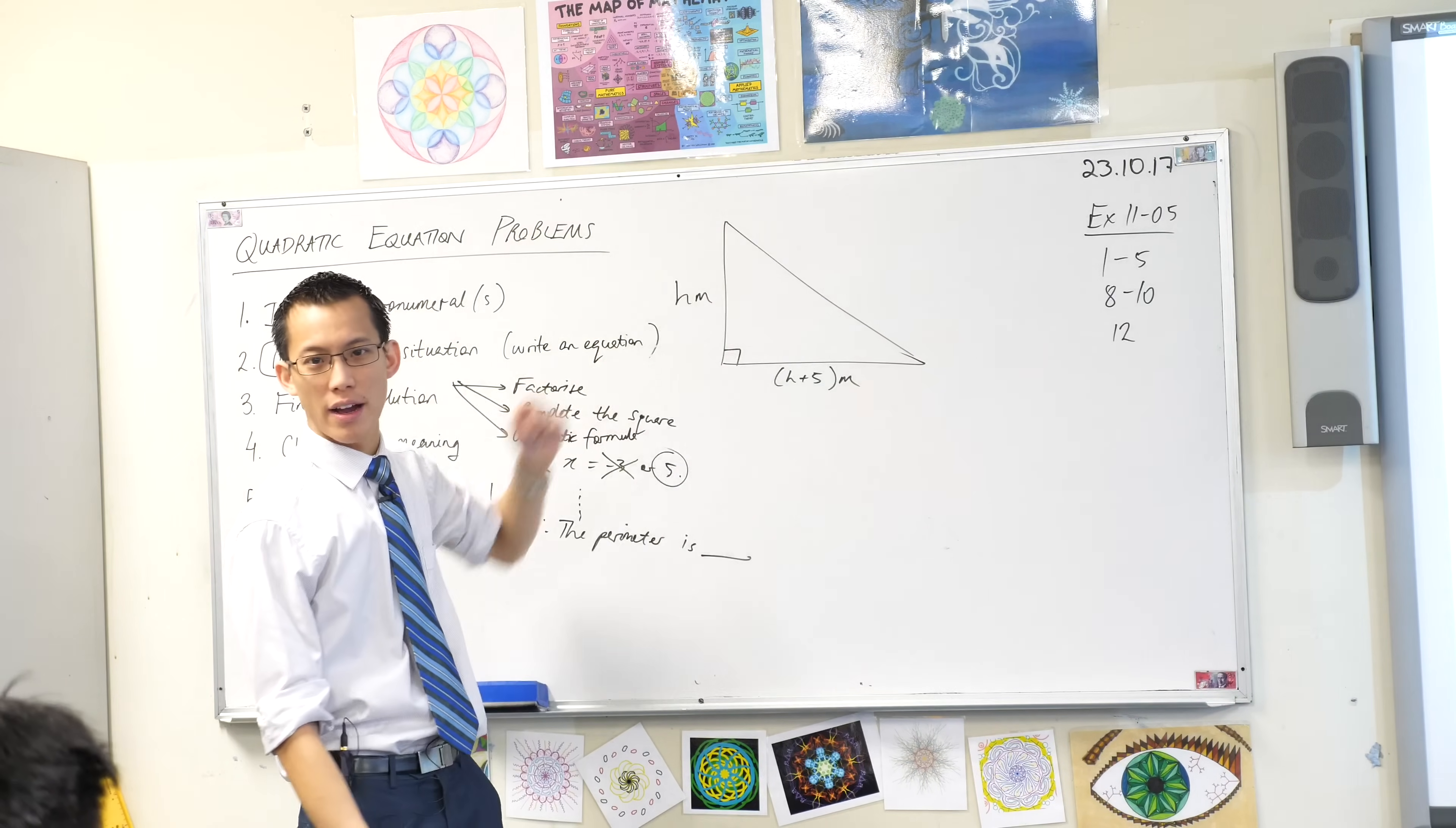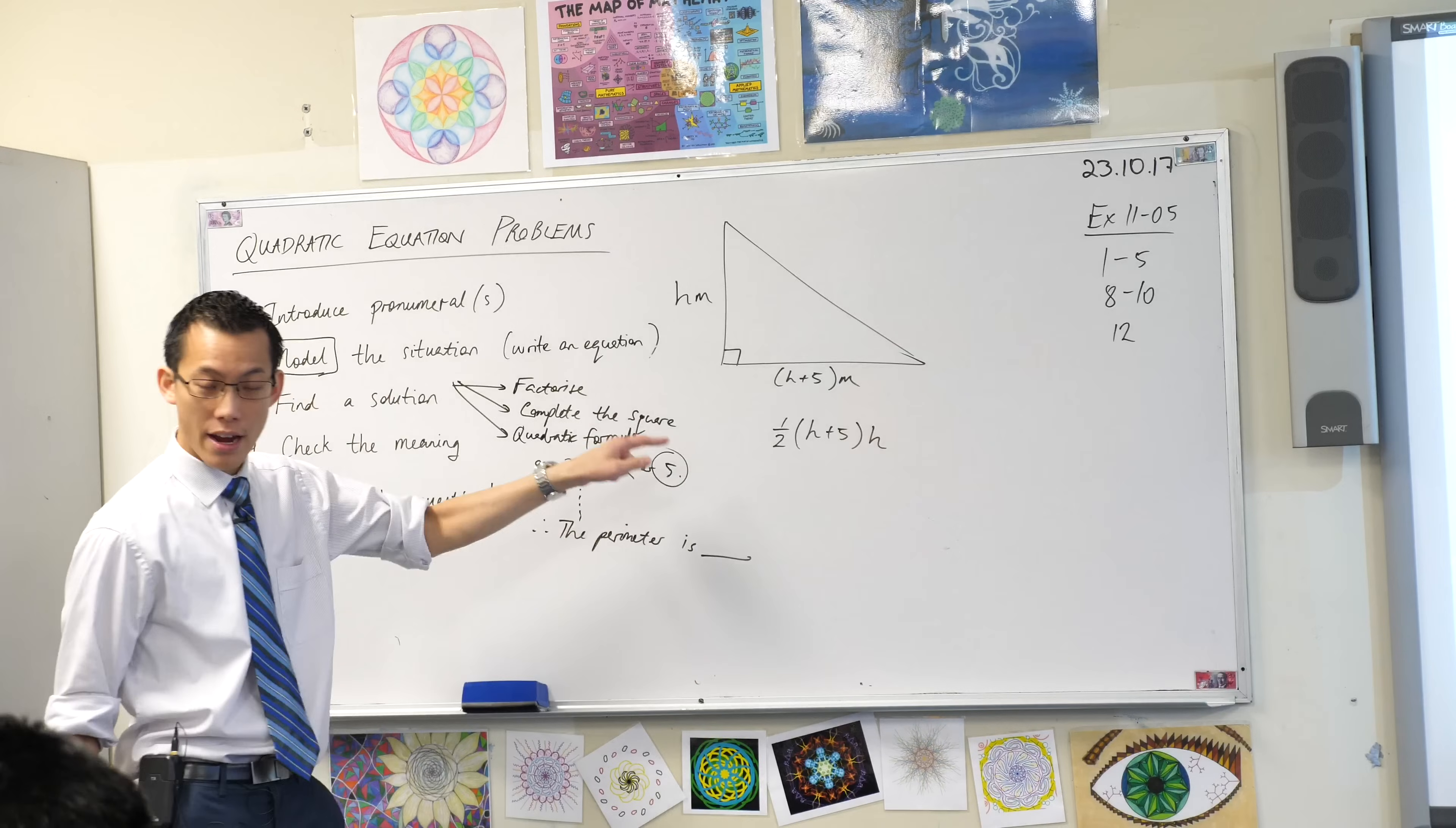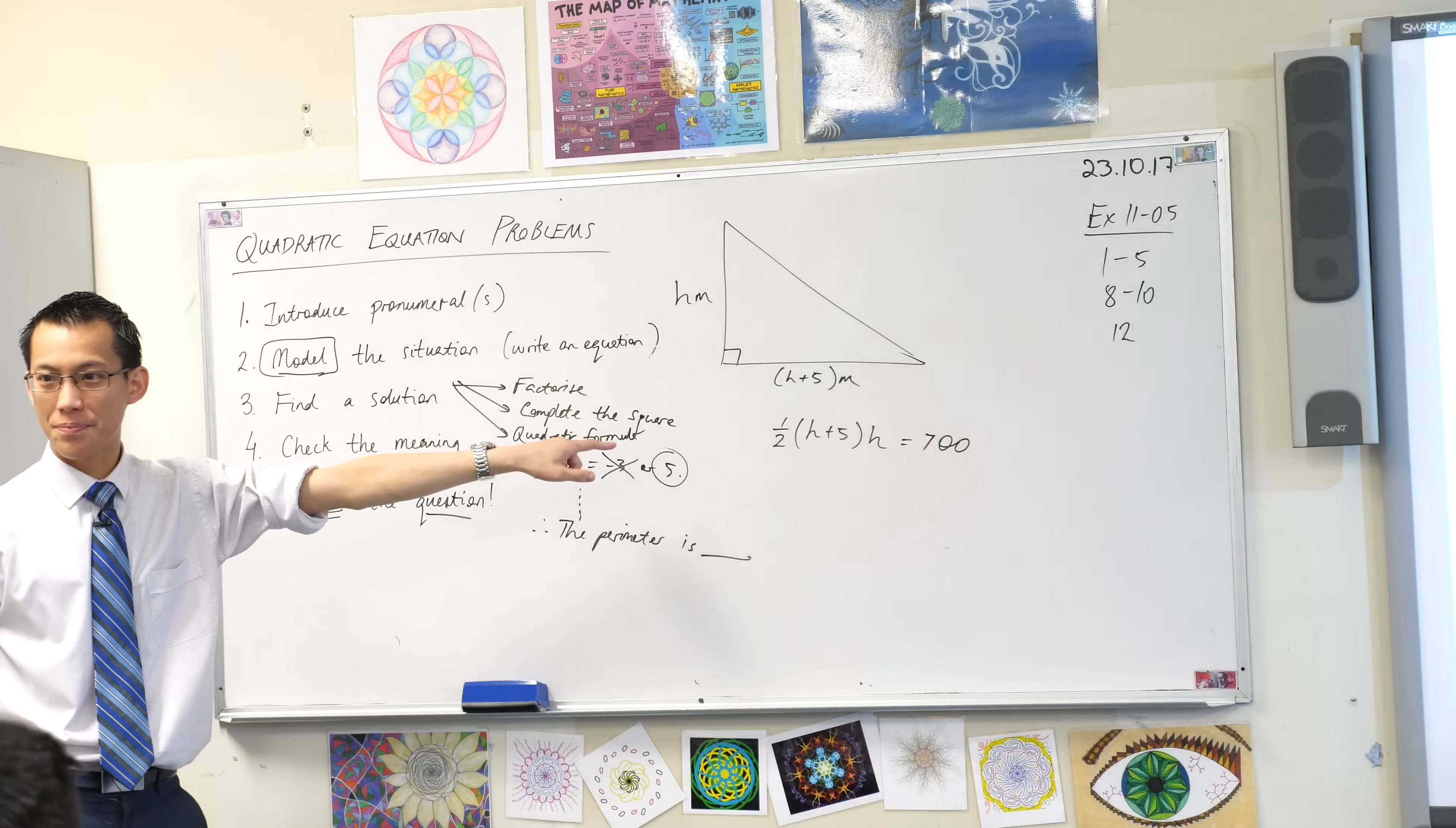What is the area of this triangle? What's the area of a triangle in general? It's half base times height. A half base times height. Do you agree? That's the area of the triangle right there. But I know what the area of the triangle is. They tell me it's going to be equal to 700. So this thing here, that's my model.